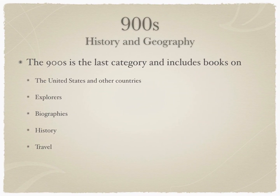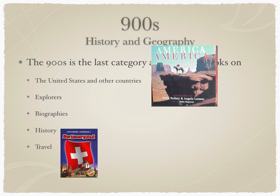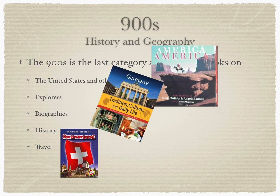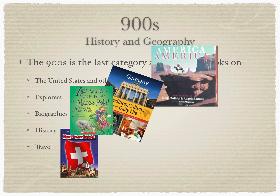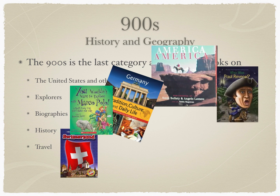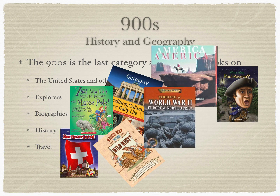Nine Hundreds: History and Geography. The Nine Hundreds is the last category and includes books on the United States and other countries, explorers, biographies, history, and travel.